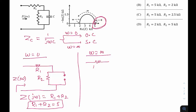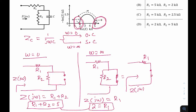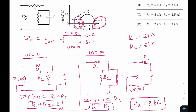At ω = ∞ the capacitor is short-circuited, so R2 is shorted out (R2 parallel with 0 = 0). The impedance becomes Z(jω) = R1 only. From the plot, at ω = ∞ the impedance value is 2, so R1 = 2 kΩ. Substituting back: R2 = 5 minus R1 = 5 minus 2 = 3 kΩ. So R1 = 2 kΩ and R2 = 3 kΩ, which is option a.